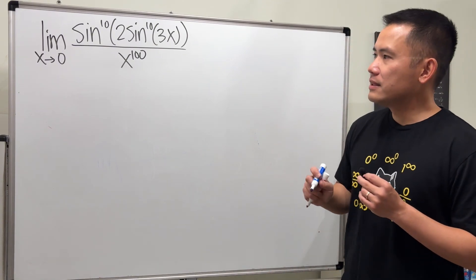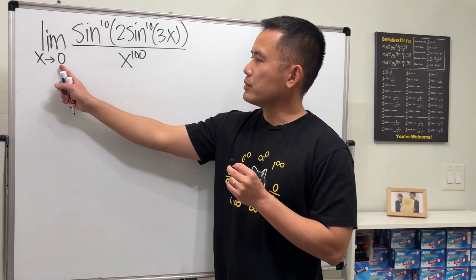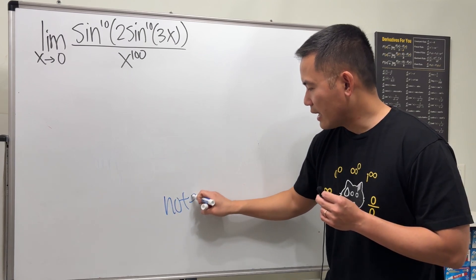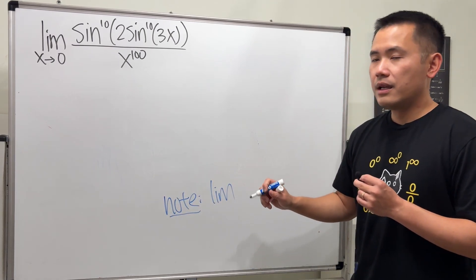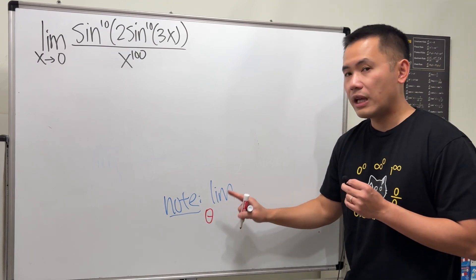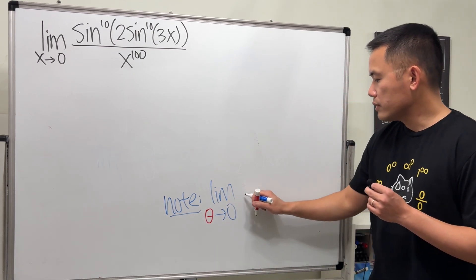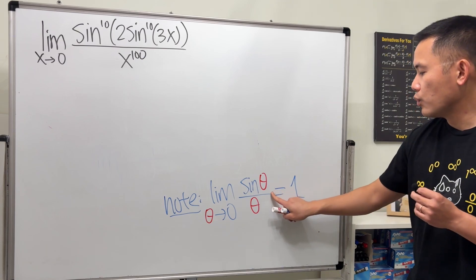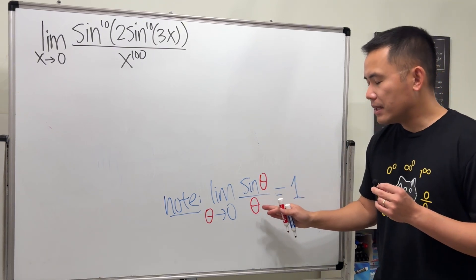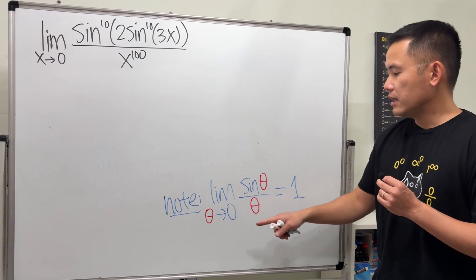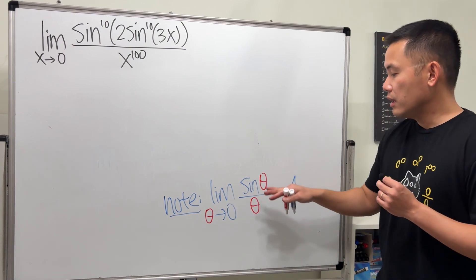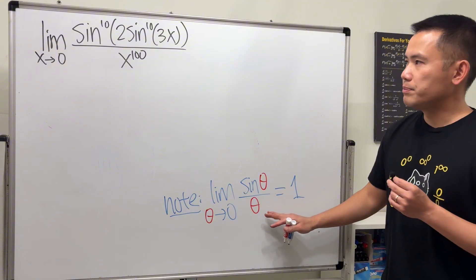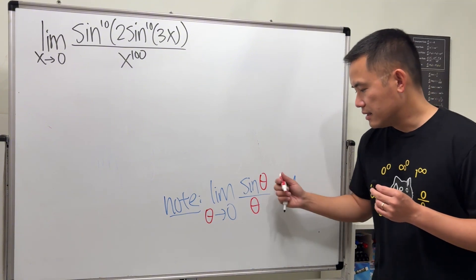Here is the key: when we have the limit as x approaches zero and we see sine and also x on the bottom, we are going to utilize this standard limit. In general, if we have some input — call it theta — approaching zero, then the limit of sine(theta) over theta equals one. Please do not use L'Hôpital's rule for this either, because even though we have zero over zero, you will run into a circular reasoning situation, which is bad.